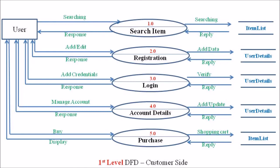The final process in the level 1 DFD is purchase. Once a user is registered, they are able to purchase a product. The purchase process is associated with the item list data store. This completes the level 1 DFD for the customer side.